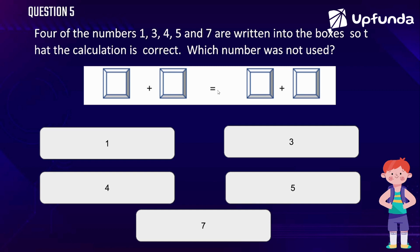So 1 plus 7 equals 3 plus 5. The left out number is 4, so 4 is not used.